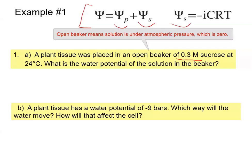In the formula, i stands for the ionization constant. In this case, because we're talking about sucrose — sucrose is a sugar and does not dissociate in water — we assign i a value of 1. So let's calculate the solute potential: it's going to be 1 multiplied by the molarity of 0.3, multiplied by the pressure constant of 0.0831.